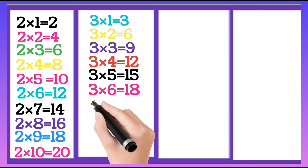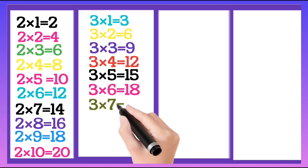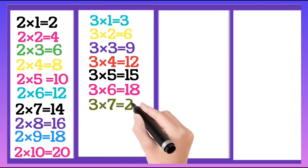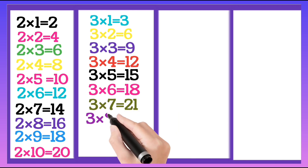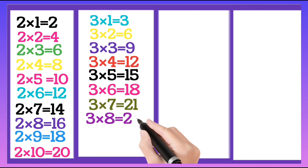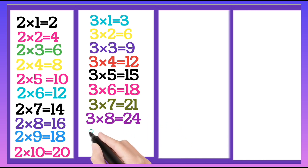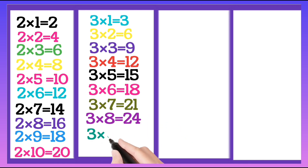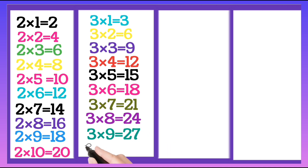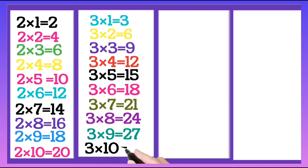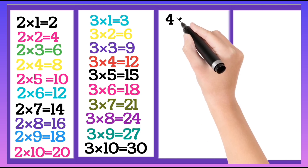Three 6's are 18, three 7's are 21, three 8's are 24, three 9's are 27, three 10's are 30.